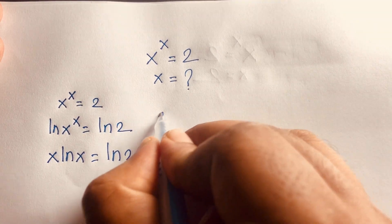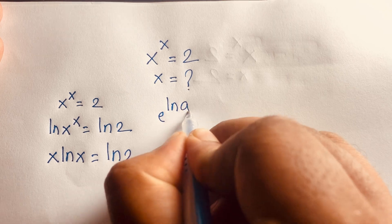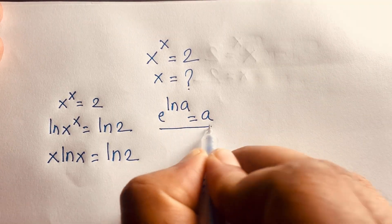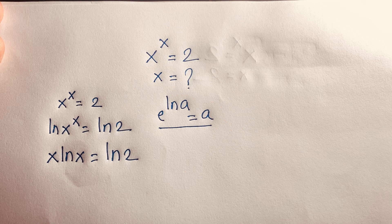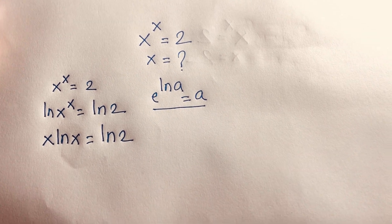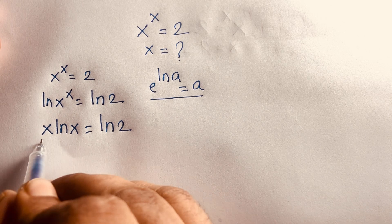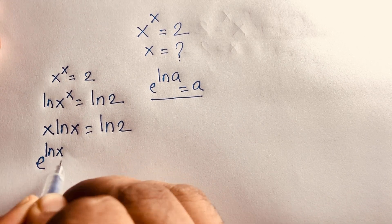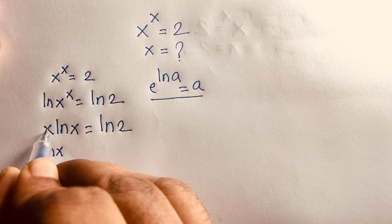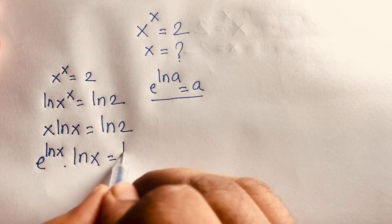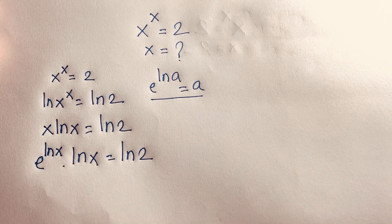At this point we use the identity: e to the power ln(a) equals a. So a equals e to the power ln(a). Applying this, x can be written as e to the power ln(x). Since e^(ln x) = x, we now have ln(x) times e to the power ln(x) equals ln(2).